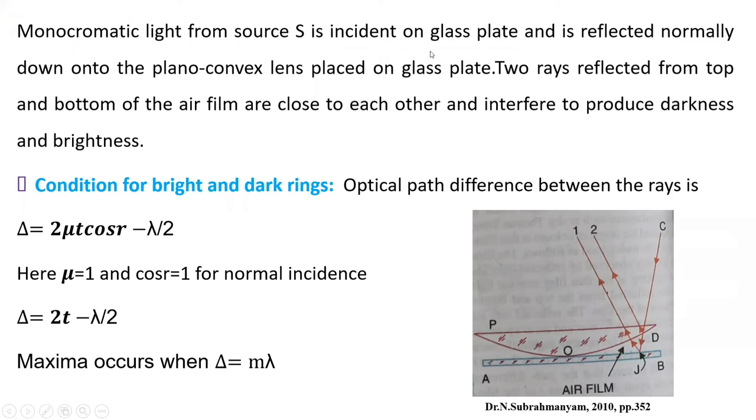So light from source is incident on the glass plate, reflected normally down onto the plano-convex lens placed on that glass plate, we have already discussed.